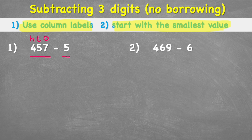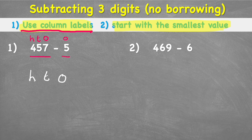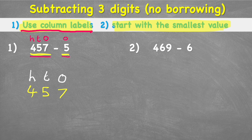Our second number — the one-digit number 5 — is obviously in our ones column. Step one says use column labels, so before placing the numbers I'll put column labels: ones, tens, and hundreds. That makes it much easier to put numbers in the correct place. I have 457: seven ones go in the ones column, five in the tens, and four in the hundreds.